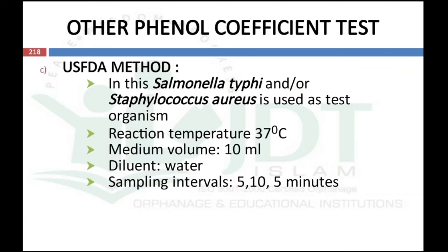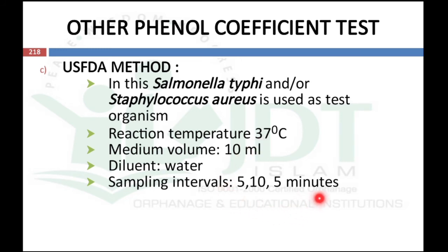Another method for the phenol coefficient test is the US FDA method. In this, Salmonella typhi and Staphylococcus aureus are used as test organisms. The reaction temperature is 37°C, the medium volume is 10 ml instead of 5 ml as in the Riedel-Walker test, and water is used as the diluent. Sampling intervals are at 5, 10, and 15 minutes.